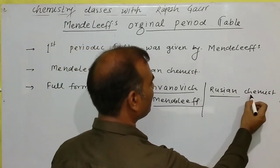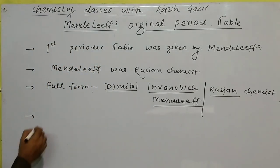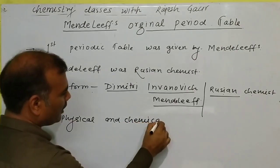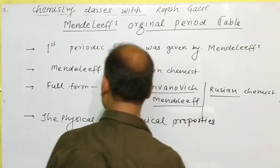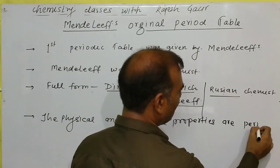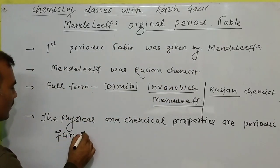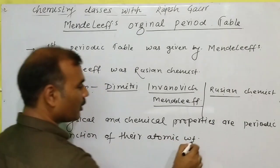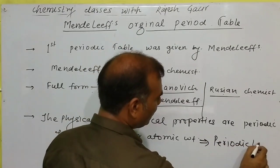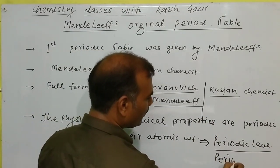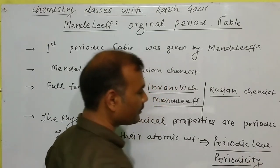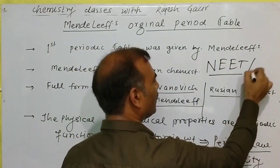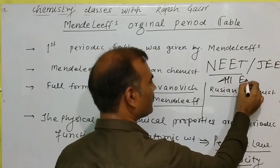The next point: the physical and chemical properties of elements are a periodic function of their atomic weight. This is called the Periodic Law, or Periodicity. This is a most most important question that has appeared in NEET and all entrance examinations.